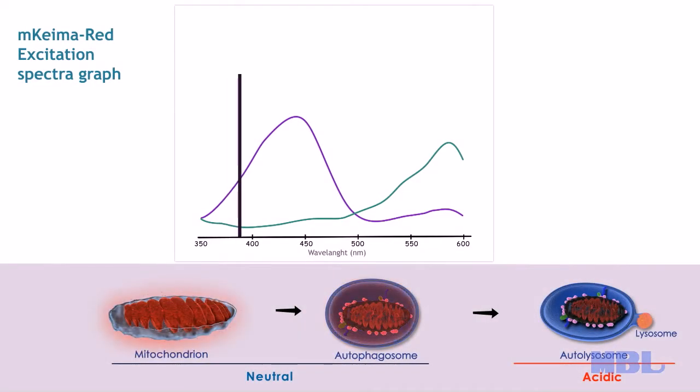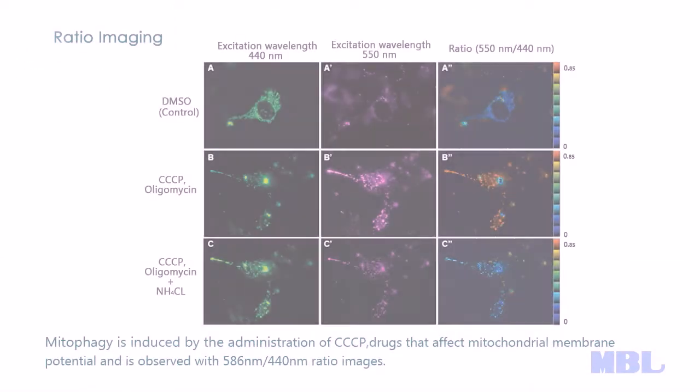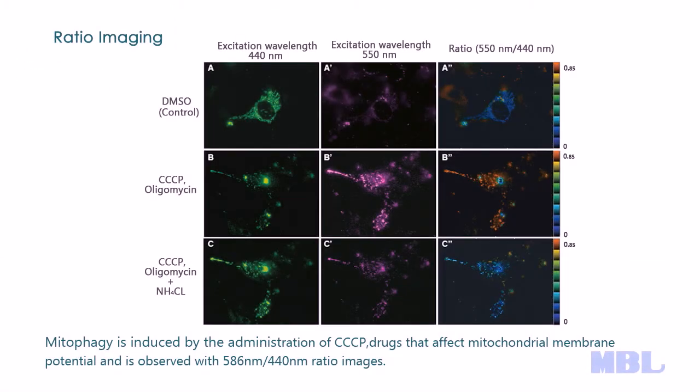MBL's chemo-red has excitation spectra that change with pH, so you can detect red fluorescence of mitochondria and autophagosome at 440 nm excitation and autolysosome at 586 nm. You can visualize before and after effects of mitophagy with ratio images.